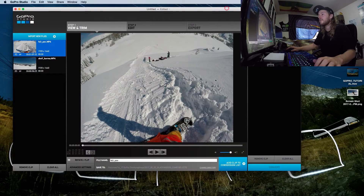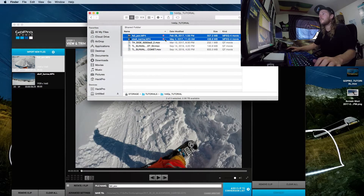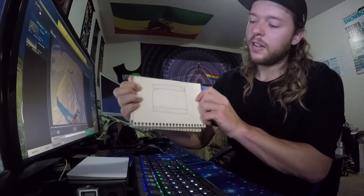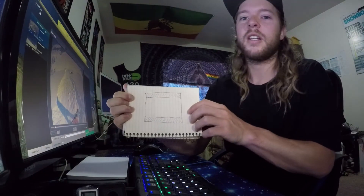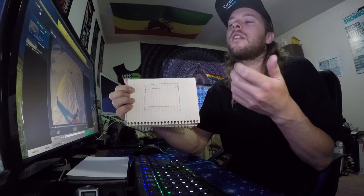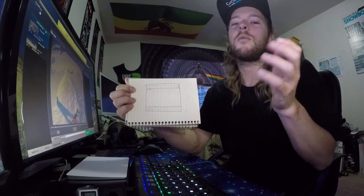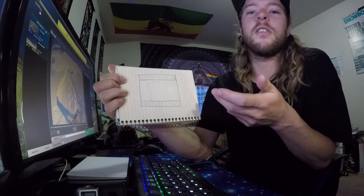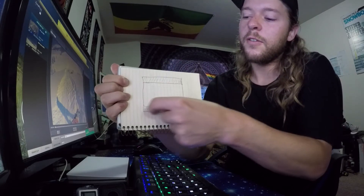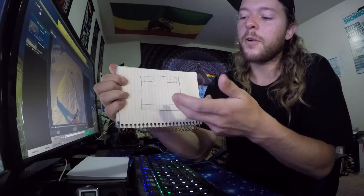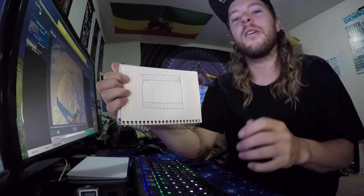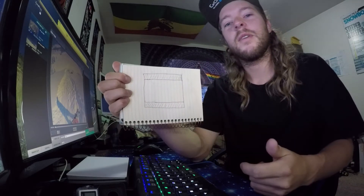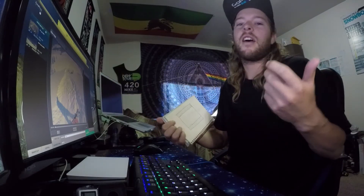Here we are in GoPro Studio. To explain what I mean by 4x3 — this white box right here is 16x9, which is what you normally see on TV: standard HD widescreen. 1080p, 4K — all those numbers are 16x9. 4x3 on the GoPro is actually a taller field of view because the GoPro sensor is physically a 4x3 sensor. So when you record 1080p or 4K in any 16x9 mode, you always get that field of view.